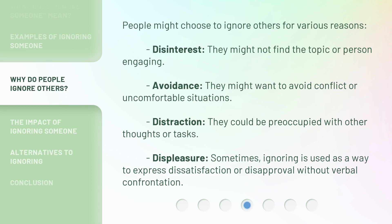People might choose to ignore others for various reasons. Disinterest — they might not find the topic or person engaging. Avoidance — they might want to avoid conflict or uncomfortable situations. Distraction — they could be preoccupied with other thoughts or tasks. Displeasure — sometimes ignoring is used as a way to express dissatisfaction or disapproval without verbal confrontation.